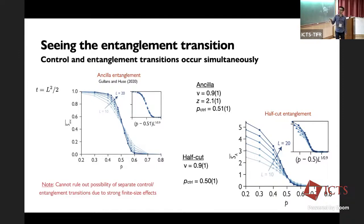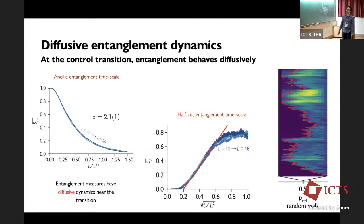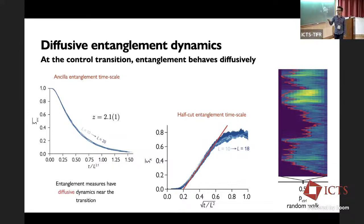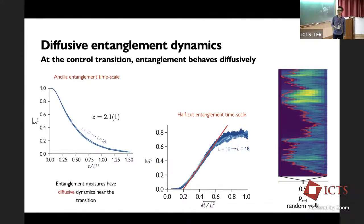We can't rule out a separate control and entanglement transition. Looking at the time dynamics, we can extract Z equals two from how the ancilla purifies in time — scaled by T over L to the 2.1, all curves align on top of each other. The half-cut entanglement grows with the square root of T. So we see diffusive dynamics consistent with the random walk picture for the first domain wall.